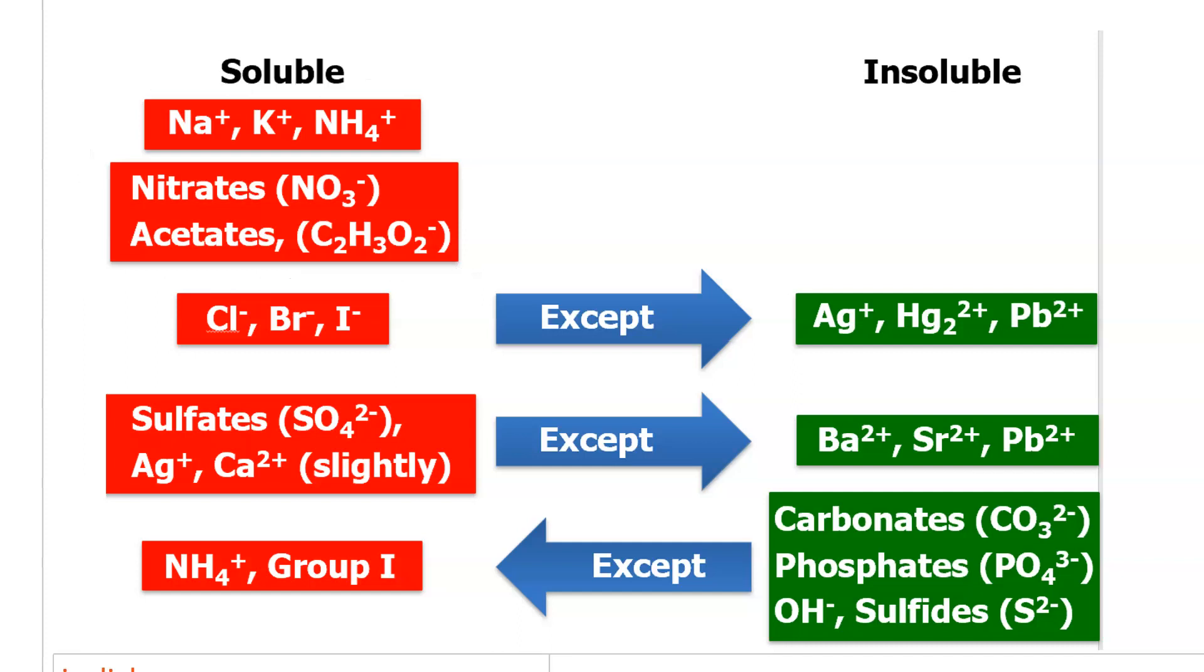So, if an ionic compound contains any one of these cations, sodium, potassium, ammonium, or any one of these anions, nitrate or acetate, then it will be soluble, regardless of what the other ion is. And remember, ionic compounds contain two ions, and you have to decide whether the combination of those two ions is soluble or insoluble.